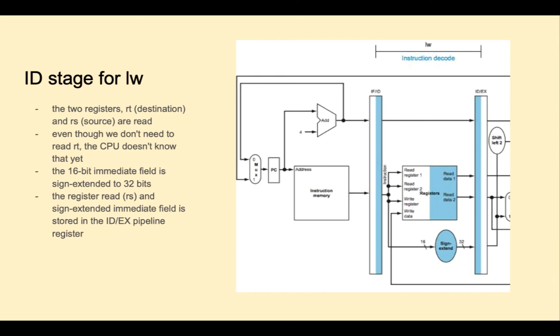For the instruction decode stage and register read, the instruction is read from the first pipeline register and decoded. RS and RT are read and their values are saved on the next pipeline register. Even though we don't need to read the RT for a load word, the CPU doesn't know that yet. This could be a store word instruction. The 16-bit immediate field is picked off the bottom half of the instruction and sign extended to 32 bits and written to the pipeline register.